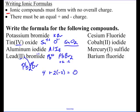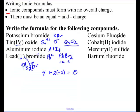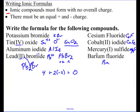Let's move on to the next. Cesium fluoride. Where will I find cesium? Cesium is over here. It's an alkali metal. Fluorine's a halogen. So, CsF. Cobalt 2 iodide. CoI2. Mercury 1 sulfide. Hg2S. Barium fluoride. Barium's alkaline earth metal. BaF2.